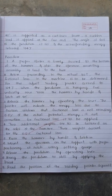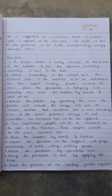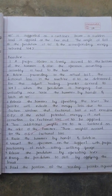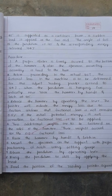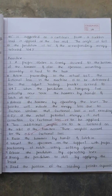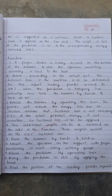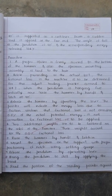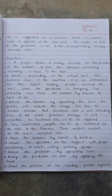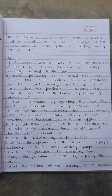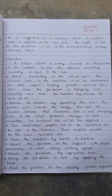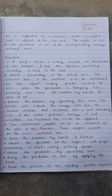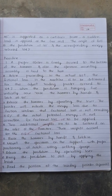Raise the hammer by hand and latch it at 90 degrees. Release the hammer by operating the lever and the pointer will indicate the energy loss due to friction. Confirm the friction loss is not exceeding 0.5% of the initial potential energy. If not, correction of friction loss is to be applied.